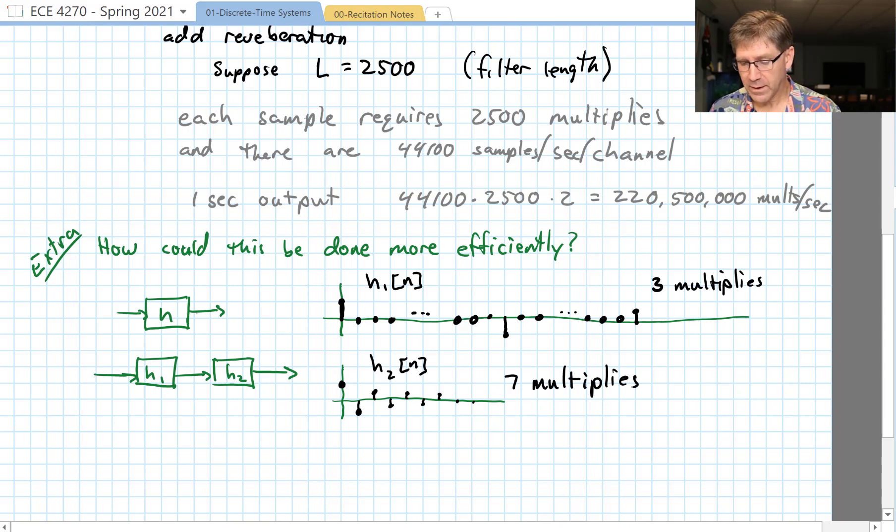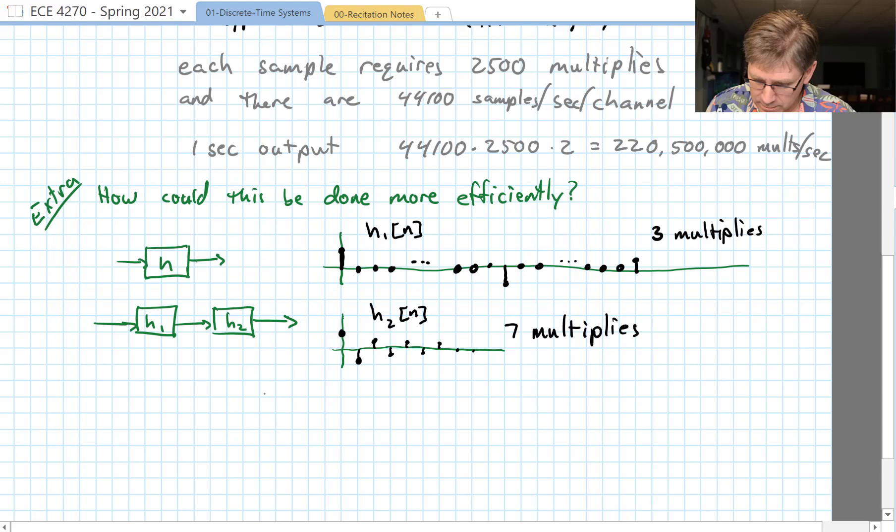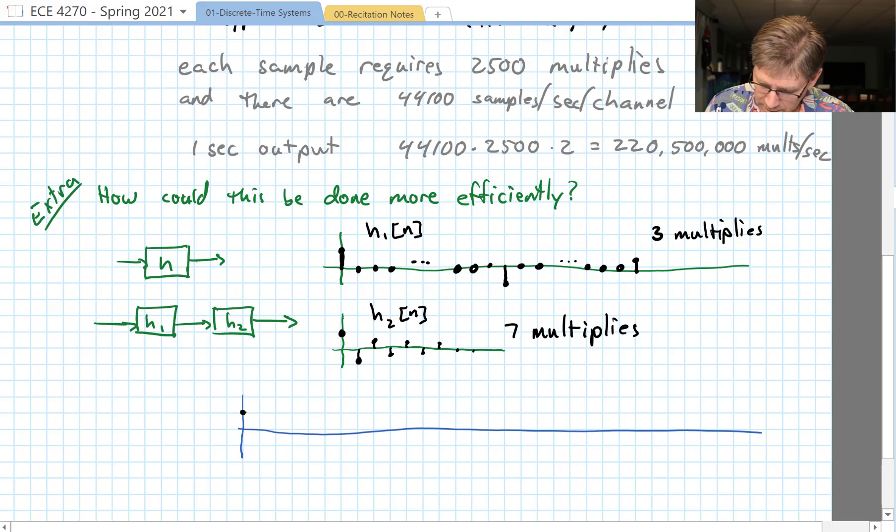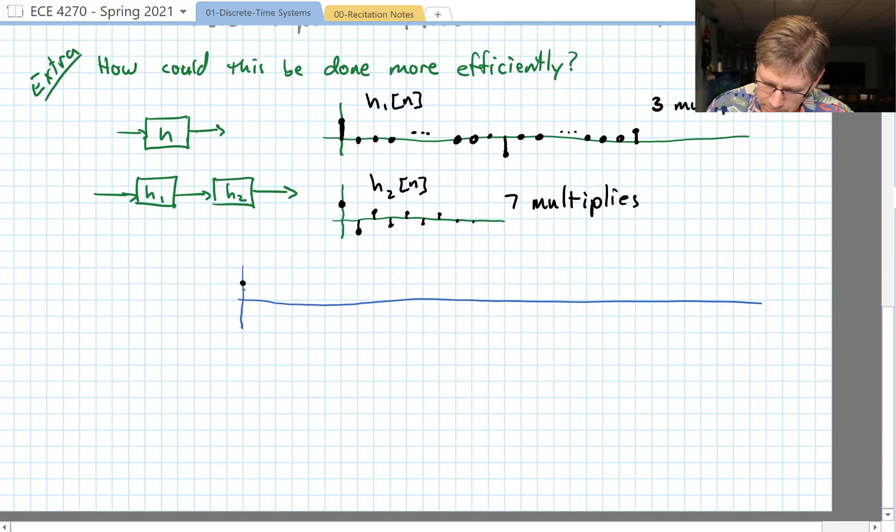So now we filter our signal through H1 first and then through H2. What do we get? We get something that looks like this. The first sample out, we will ring one, two, three, four, five, six, seven like that.